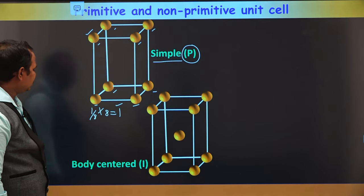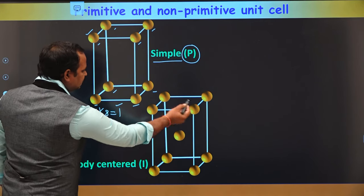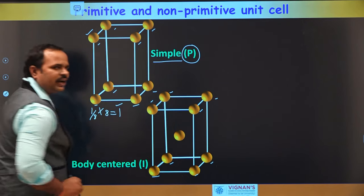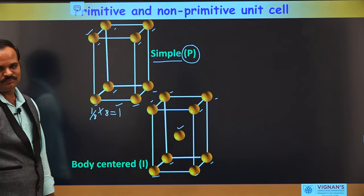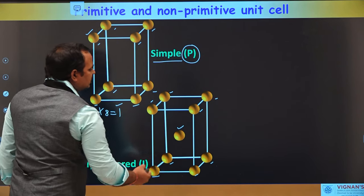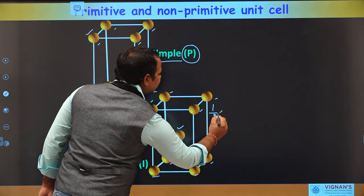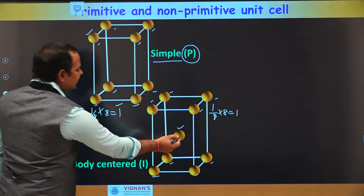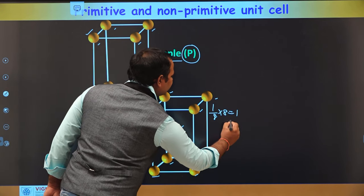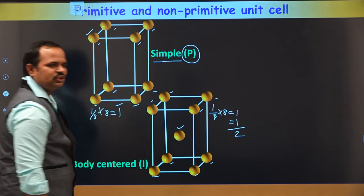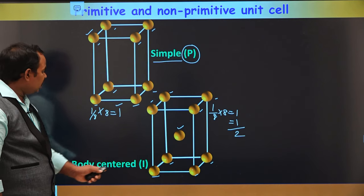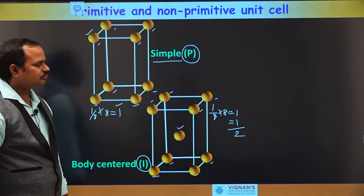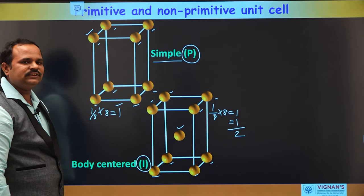The next one is the body-centered lattice. In this lattice, atoms are at the 8 vertices contributing 1/8 each (totaling 1), and there is another atom at the center of the unit cell. So the total number of lattice points per unit cell is 2. Therefore, the body-centered lattice is a non-primitive unit cell, represented with the letter I.